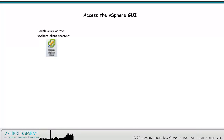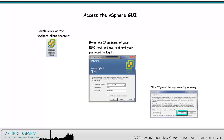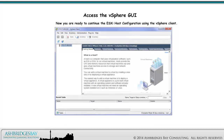Double-click on the vSphere Client shortcut. Enter the IP address of your ESXi host and use root and your password to log in. Click Ignore to any security warning. You can now access the vSphere GUI using the vSphere Client.